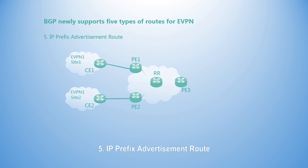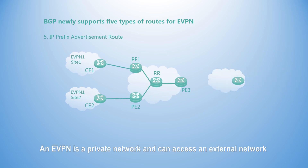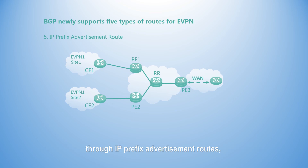Fifth, IP prefix advertisement routes. An eVPN is a private network and can access an external network through IP prefix advertisement routes, which advertise the imported external routes.